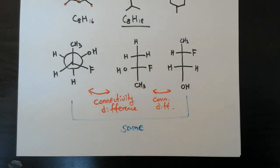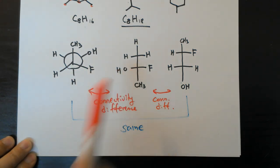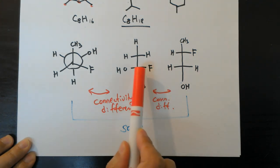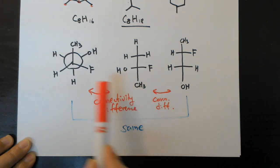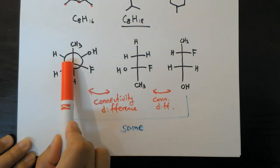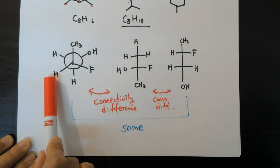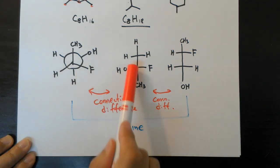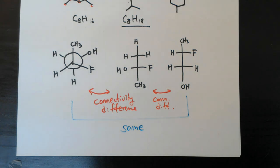Going back to the previous example: the two Fischer-projection structures had different connectivity — fluorine is connected to the carbon bearing OH and CH₃ in one, but to the carbon bearing CH₃ and H in the other. Therefore, those two compounds, having the same formula but not superimposable and having different connectivity, are in a constitutional isomer (also called regio isomer) relationship.